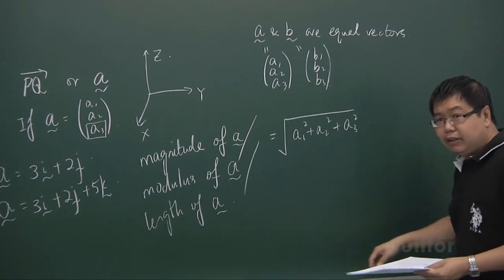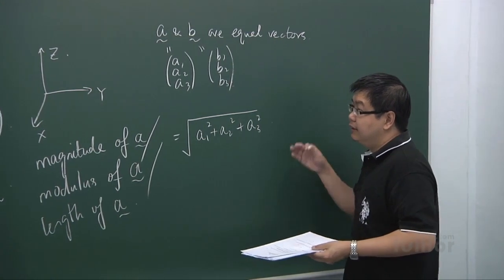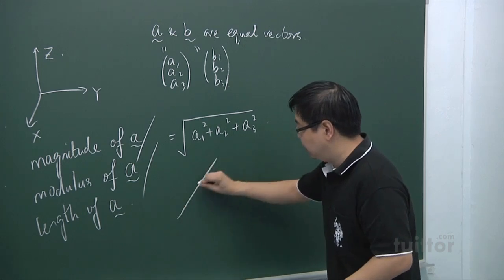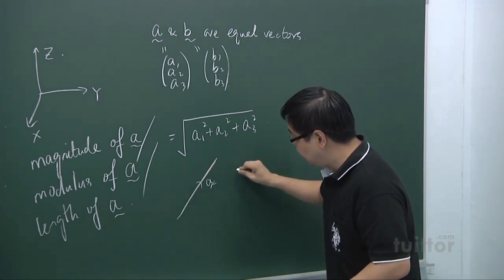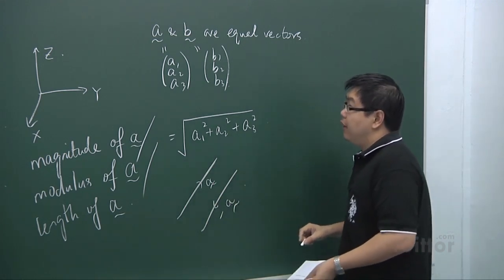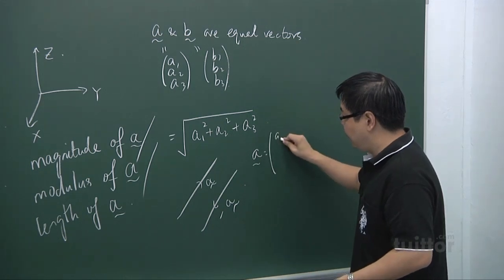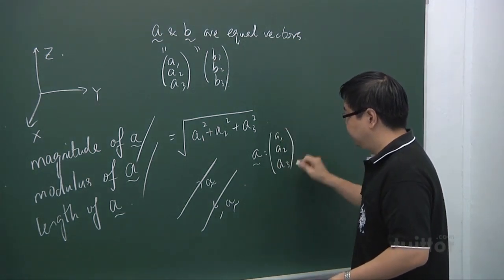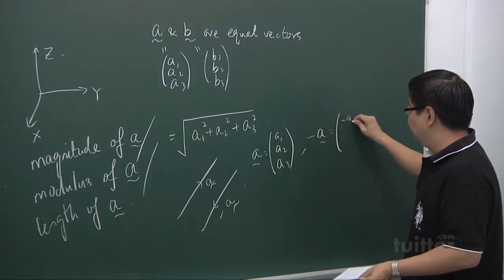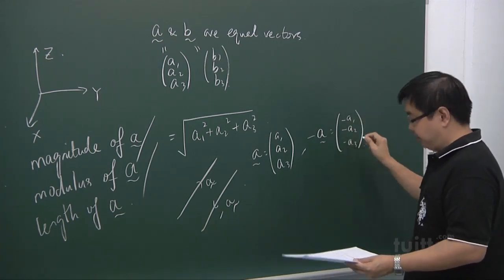The next concept is negative vectors. Negative vectors are simply in the opposite direction to the original vector. If vector A is A1, A2, A3, then negative A means negative A1, negative A2, and negative A3.